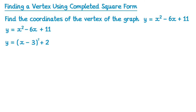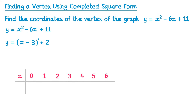But why is this useful, and how does it help us find the vertex? To answer those questions we're going to plot the graph. I've selected a table of values for x from 0 to 6. We'll substitute in those values to work out the corresponding y values. Starting with x equals 0, we substitute 0 into the equation. We have y equals 0 take away 3,